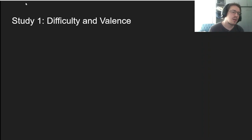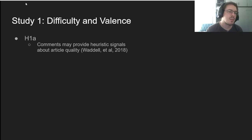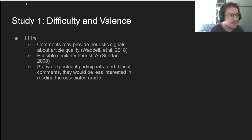For study one, we had a couple of competing hypotheses about difficulty. First, we know from past research that comments can provide heuristic signals about article quality in some cases, like how poorly argued comments can make people expect an article will be less important. This got us wondering whether a similarity heuristic might be at play here, where the qualities of a comment might signal whether the associated article will be of similar quality. Now if this is the case, we would expect people who read difficult comments to show less interest in reading the associated article, assuming it might be harder to get through.